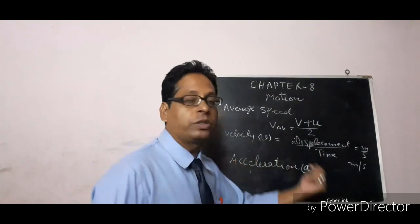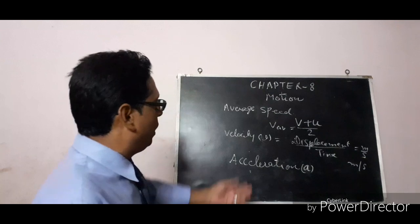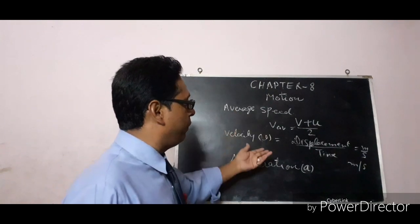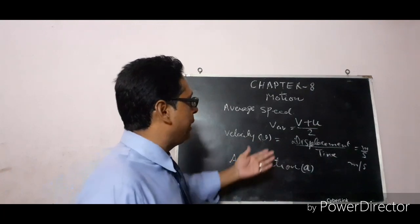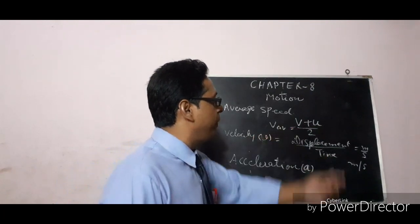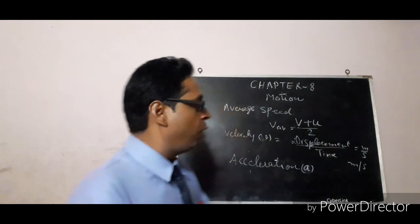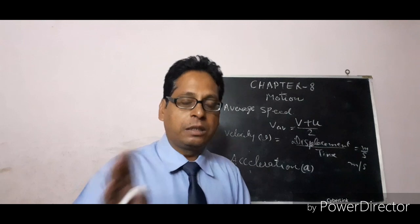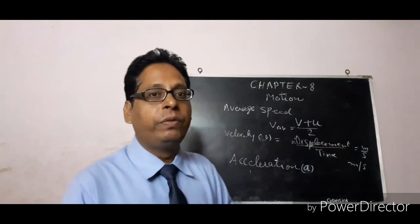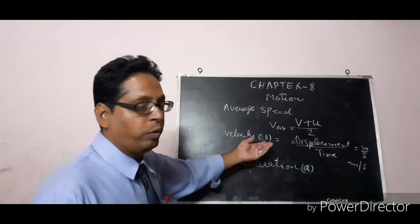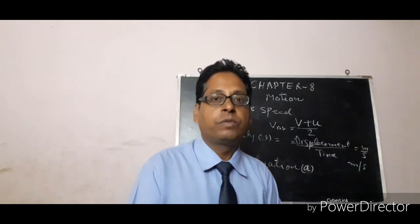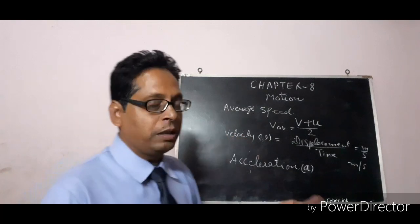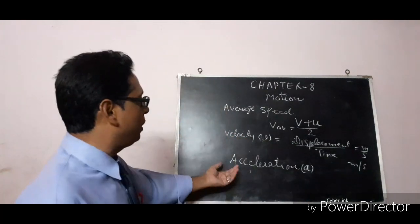Since displacement can be zero, velocity can also be zero. For average velocity, if motion is uniform we can use V plus U upon T. But if the distance is the same but time is different, in that non-uniform case we apply the formula: 2·V₁·V₂ upon V₁ plus V₂.